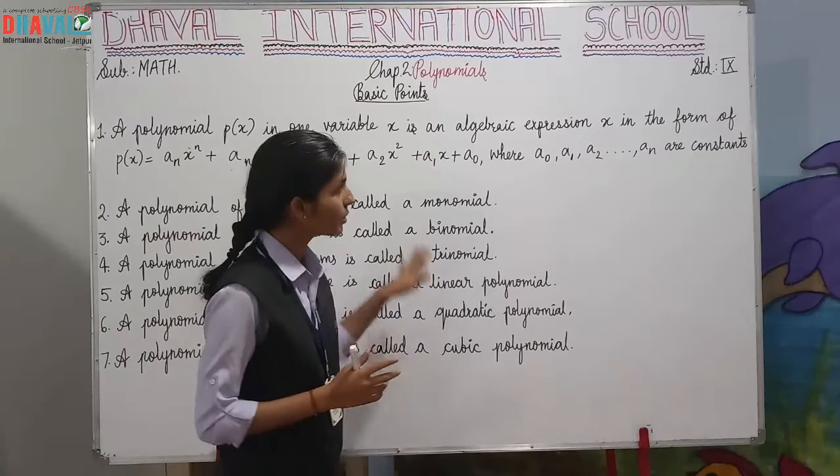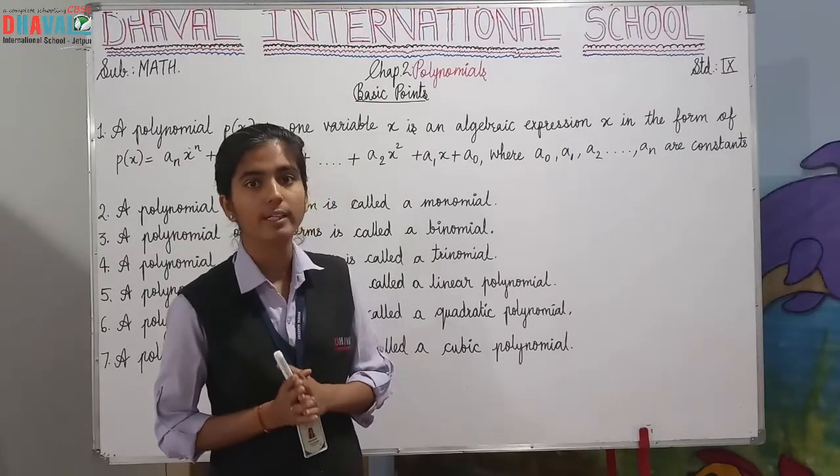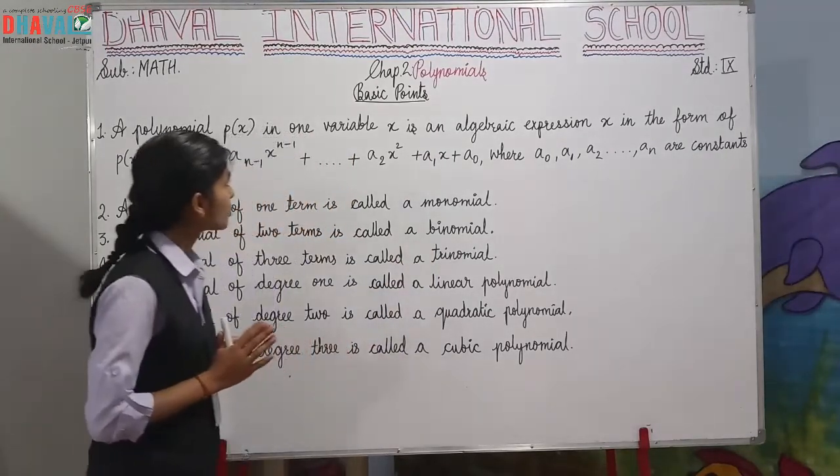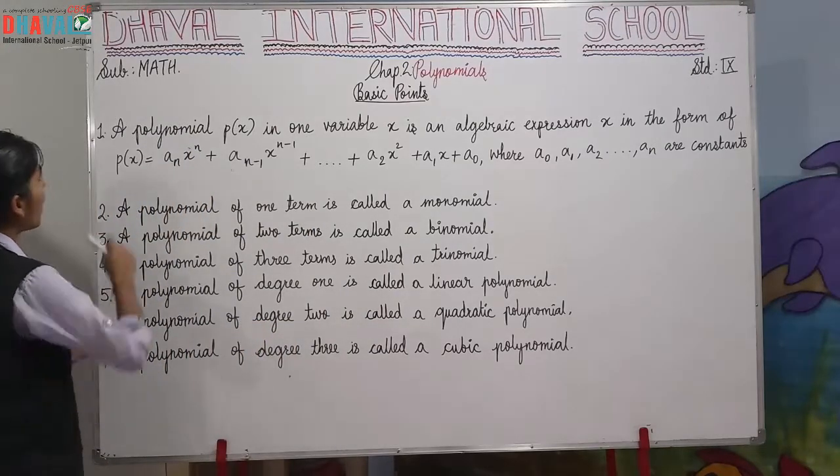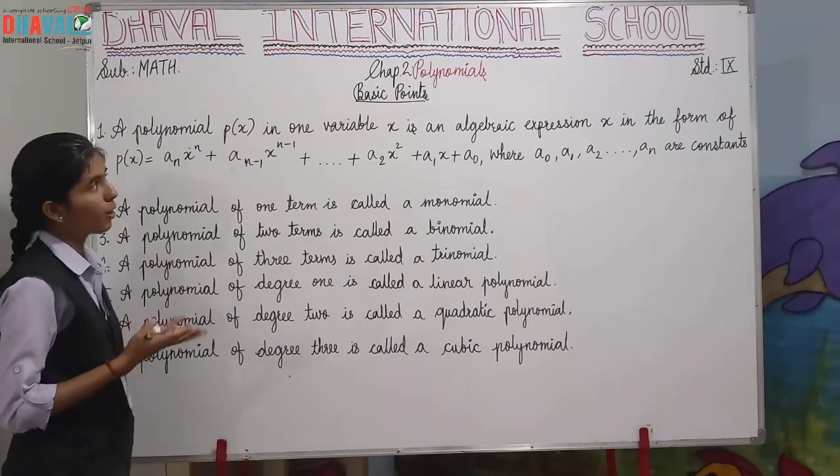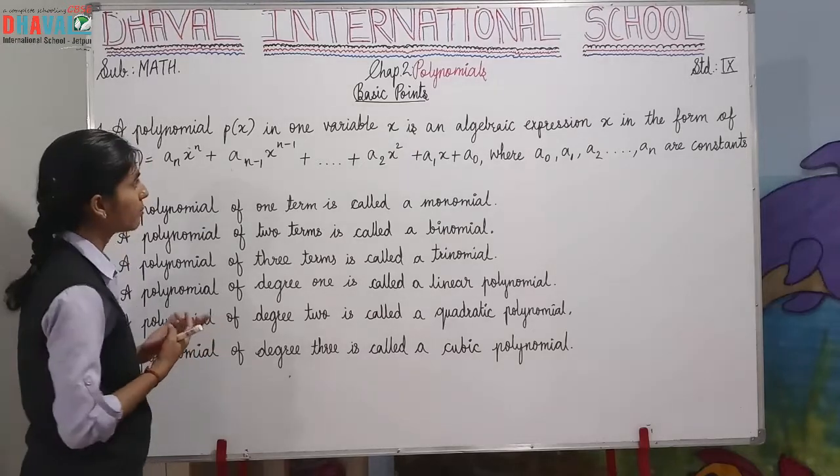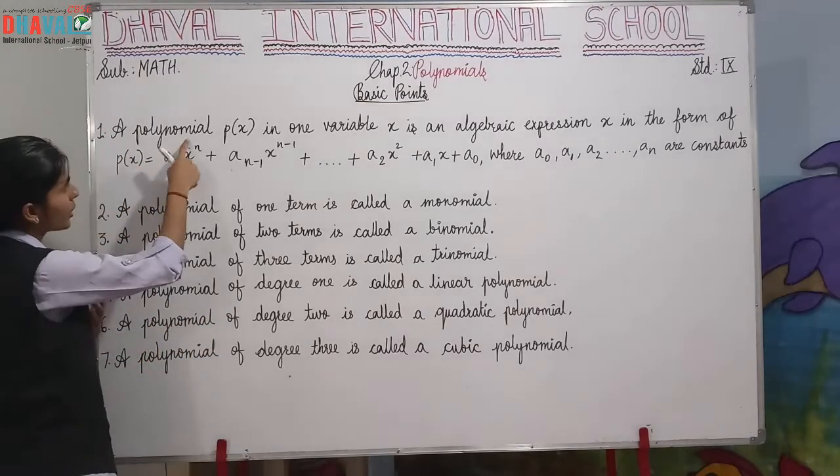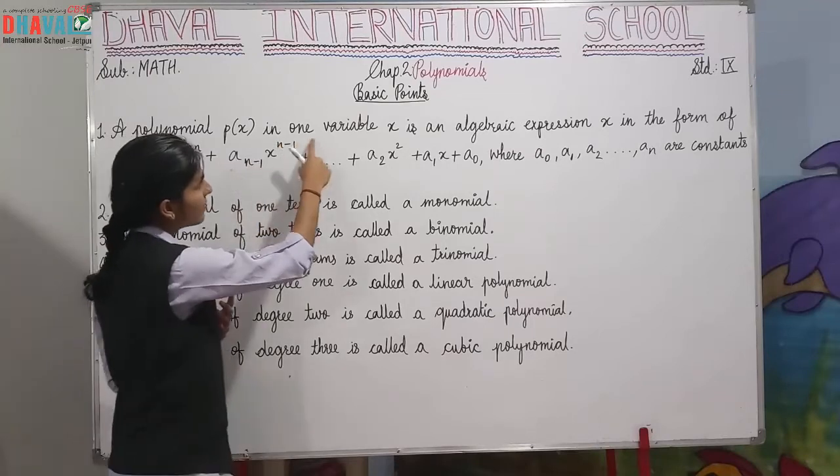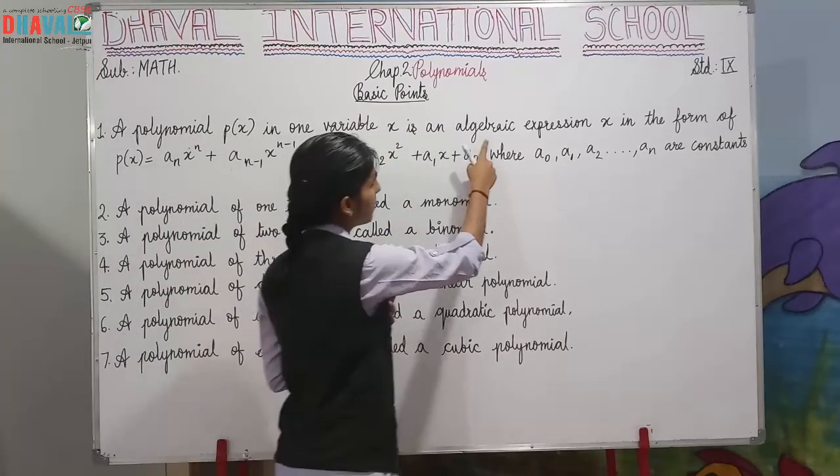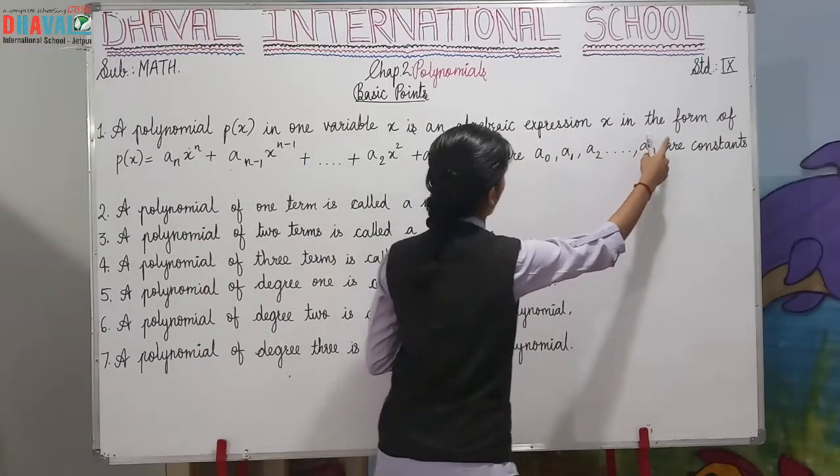And today I am going to discuss the basic points which we are going to cover in this chapter. So let's begin with the first point: a polynomial. What is a polynomial? The first definition: a polynomial P(x) in one variable x is an algebraic expression in the form of